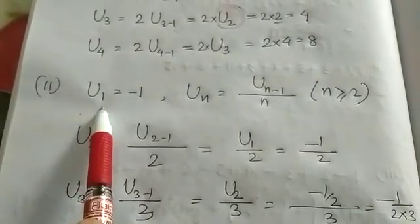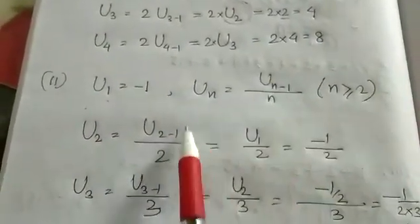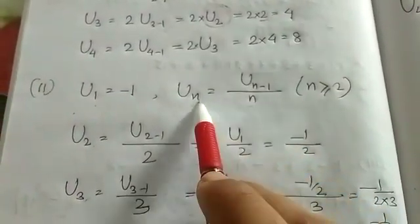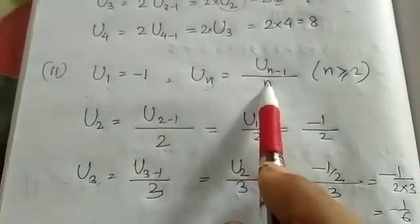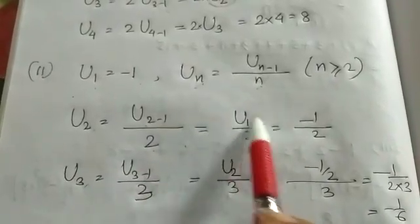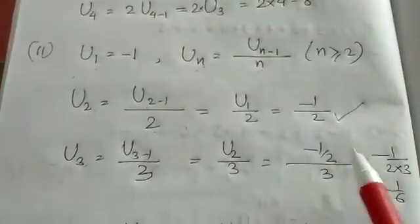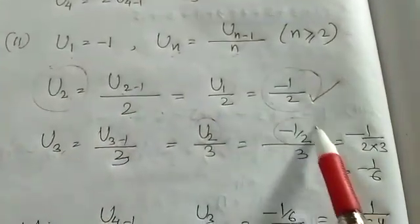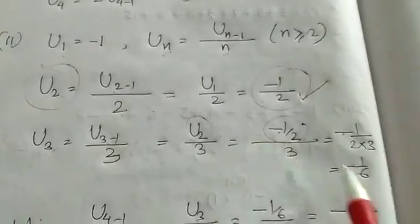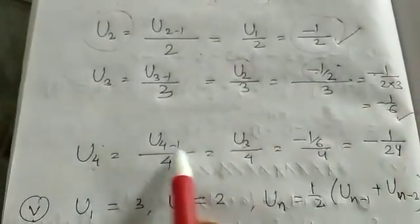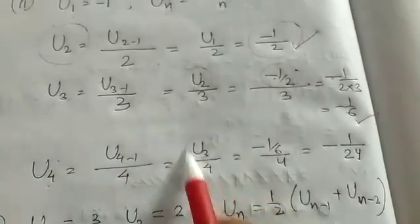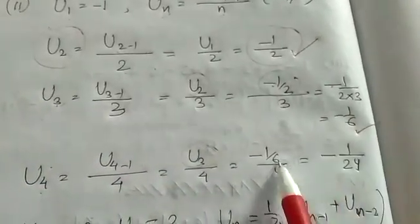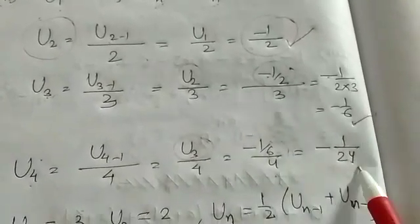Question number 2: U(1) is minus 1 and U(n) is given. We need to find U(2), U(3), and U(4). For U(2), putting n equals 2: it gives (2 minus 1) divided by 2 times U(1) = 1/2 times (minus 1) = minus 1/2. For U(3), putting n equals 3: (3 minus 1) divided by 3 times U(2) = 2/3 times (minus 1/2) = minus 1/3. For U(4): (4 minus 1) divided by 4 times U(3) = 3/4 times (minus 1/3), giving minus 1/4... so 6 fours are 24.